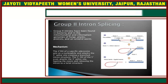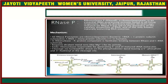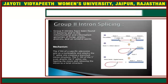The Group 2 intron splicing ribozymes have been found in bacteria, and they are also found in mitochondria and chloroplasts. In the mechanism of Group 2 intron splicing, the 2-hydroxyl group — on the 1st, 2nd, 3rd, 4th, and 5th carbons of the adenosine — is involved.